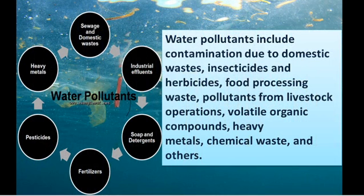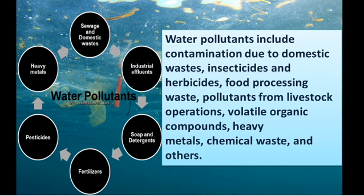What is a water pollutant? The substance that is unwanted as well as harmful, which makes the water impure or contaminated, is called a Water Pollutant. The major pollutants of water are sewage, fertilizers, pesticides, and industrial wastages. Apart from these, there are also soaps and detergents, heavy metals, domestic waste, chemical waste, organic compounds, insecticides, herbicides, and food processing wastages.